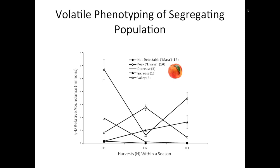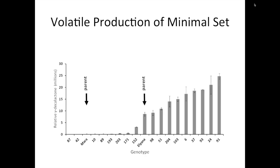In this case, for what's published in this report, we were looking at a volatile called gamma-decalactone, which is also important in peach. In strawberry, it gives a nice, fruity, sweet kind of odor or flavor when eaten, and it's present in high concentrations in some of our most highly flavored cultivars. The cross was between a Florida cultivar called Eliana and a French cultivar called Mara de Bois. Eliana was the producer for gamma-decalactone, and Mara was the non-producer.